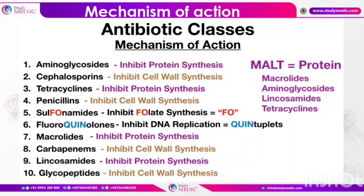Coming to tetracyclines, which include tetracycline as well as doxycycline. They mainly act by inhibiting protein synthesis, and they too act by binding with the 30S ribosomal subunit of the protein.